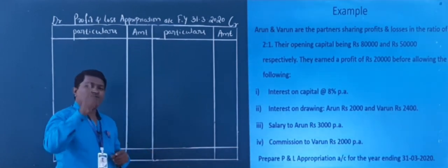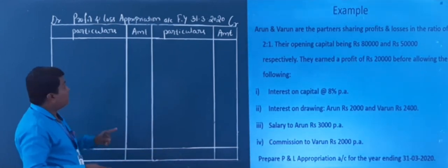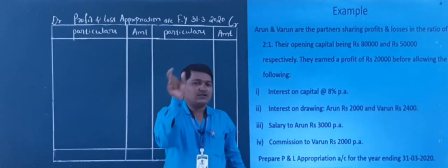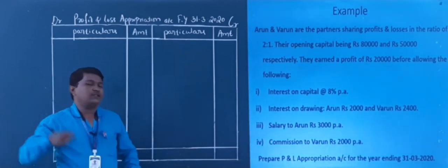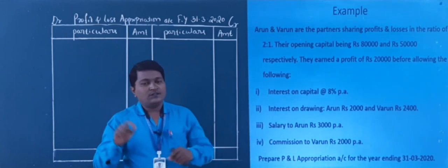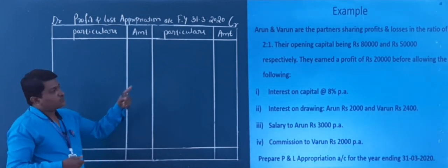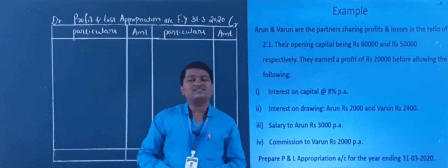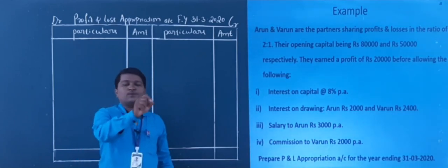Let me tell you how to prepare the profit and loss appropriation account. First of all, we need to prepare a table. The title of the account goes in the middle of the table. You have a debit side on one corner and credit side on the other corner. Get the correct format, then go over the problem. First, we need to transfer the profit of the business.